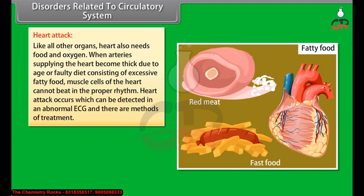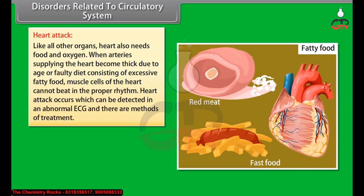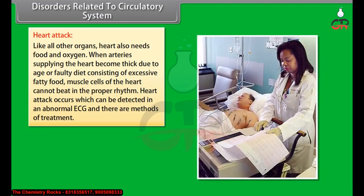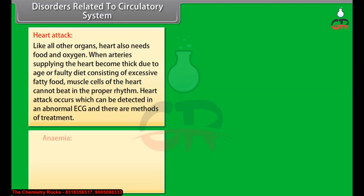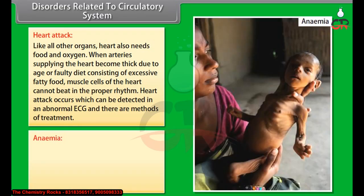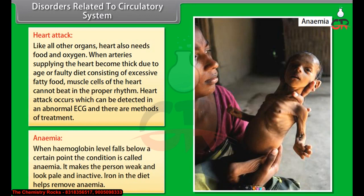Anemia occurs when the hemoglobin level falls below a certain point. It makes the person weak, pale and inactive. Iron in the diet helps remove anemia.